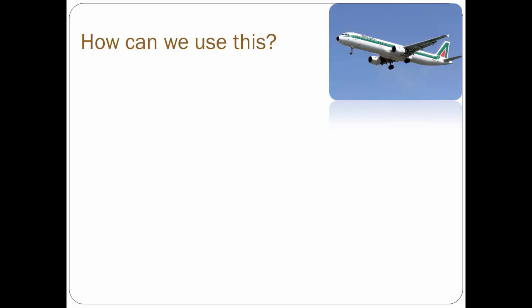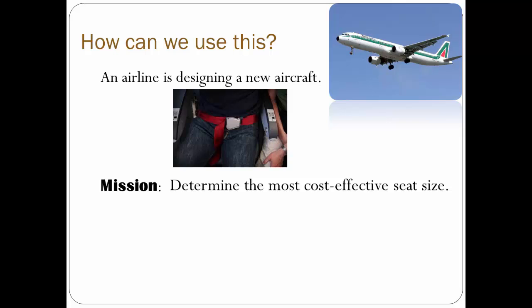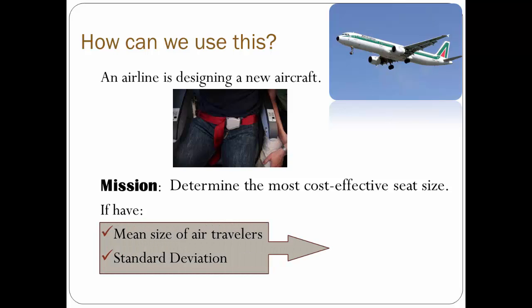Another example: assume an airline is designing a new aircraft and looking at seat size. The average economy seat width is 17.8 inches. They can't accommodate 100% of passengers, but they want to accommodate most. If they know the mean size of air travelers and the standard deviation, they can design their seats accordingly. To accommodate about 68% of passengers, they'd design seats based on the average plus one standard deviation. To accommodate about 95%, they'd design based on two standard deviations of the mean. A real purpose for statistics!